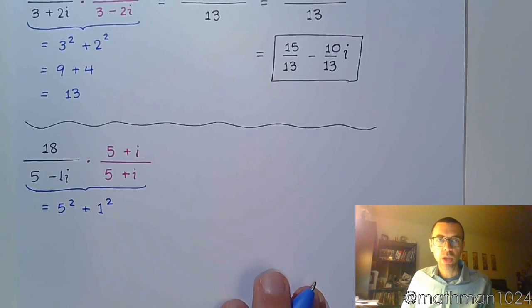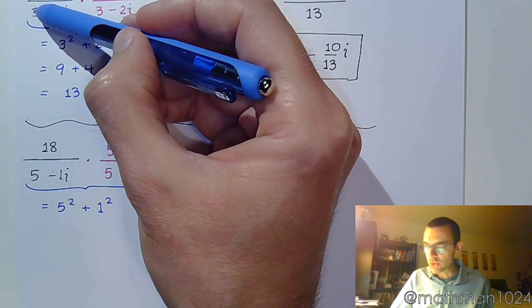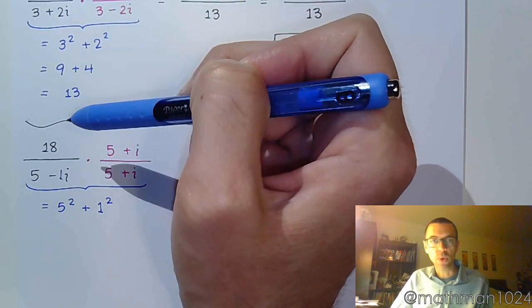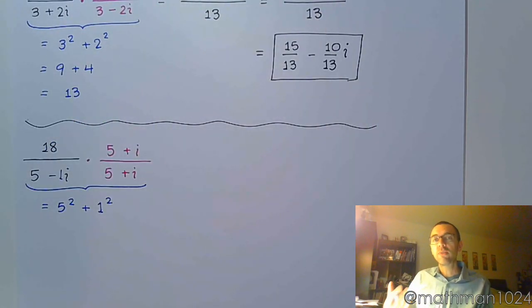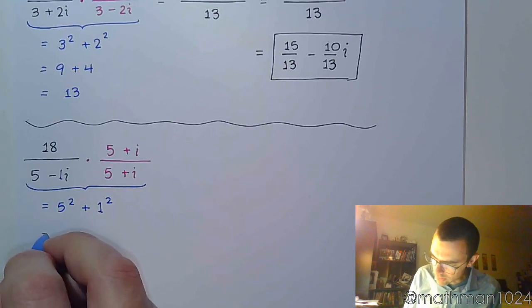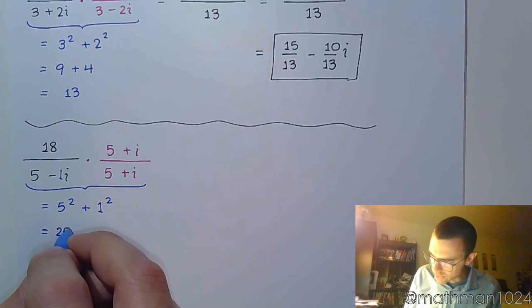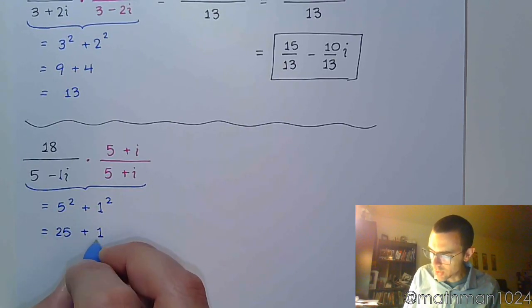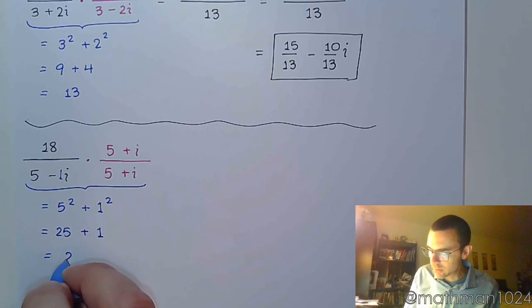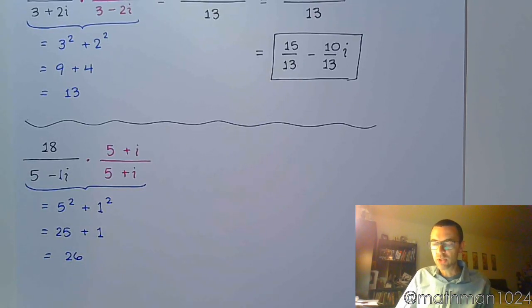So this is 5 squared plus 1 squared. Just like in the last one, you've got this product here. So you get 3 squared and you get 2 squared. You took the coefficient of the imaginary piece. So now we just work this out. That's 25. Remember that 1 squared is 1, not 2. And 25 plus 1 is 26.